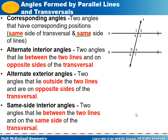Alternate exterior angles are also on alternate sides of the transversal, but outside the parallel lines. Angles one and seven, and angles two and eight are alternate exterior angle pairs — opposite sides of the transversal and outside the parallel lines. Alternate exterior angles are also congruent.